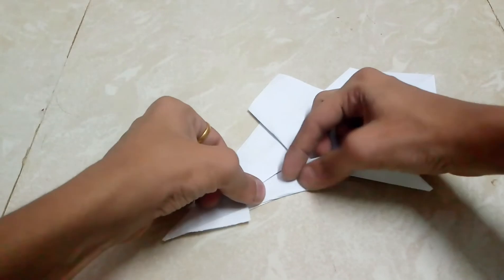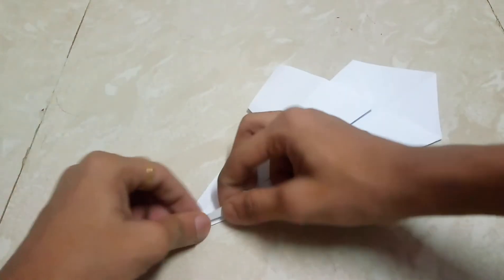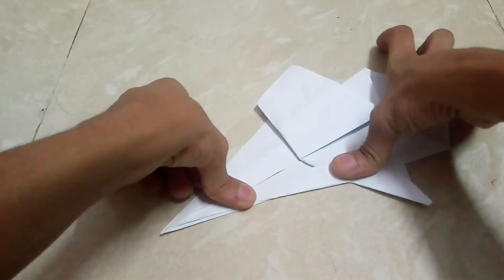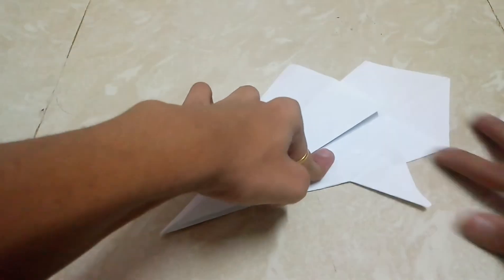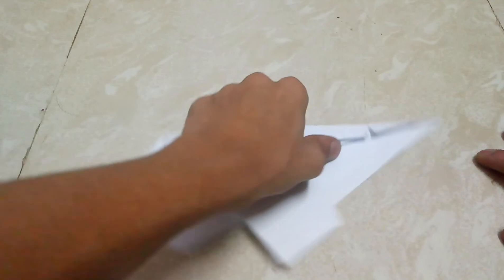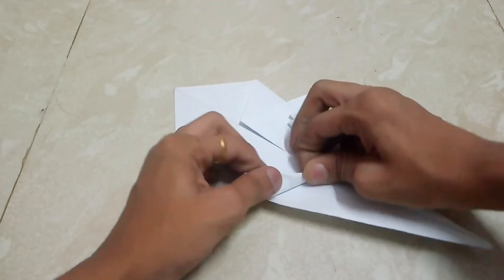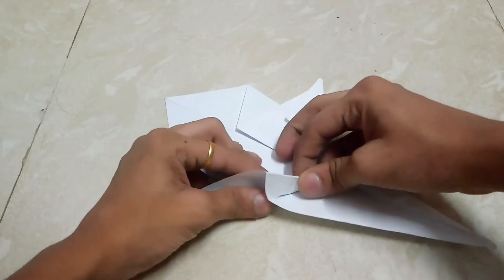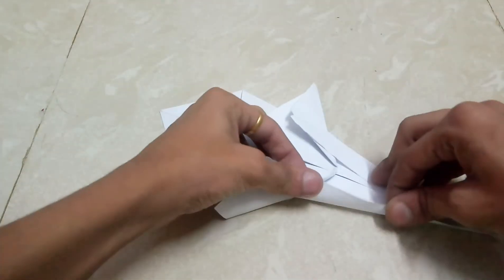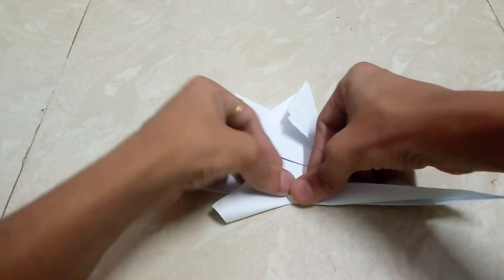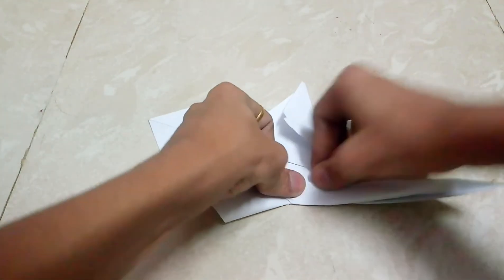You can see the paper is creased. Do the same thing on the other side. You have to adjust the sides. Now you can see this side is perfect.